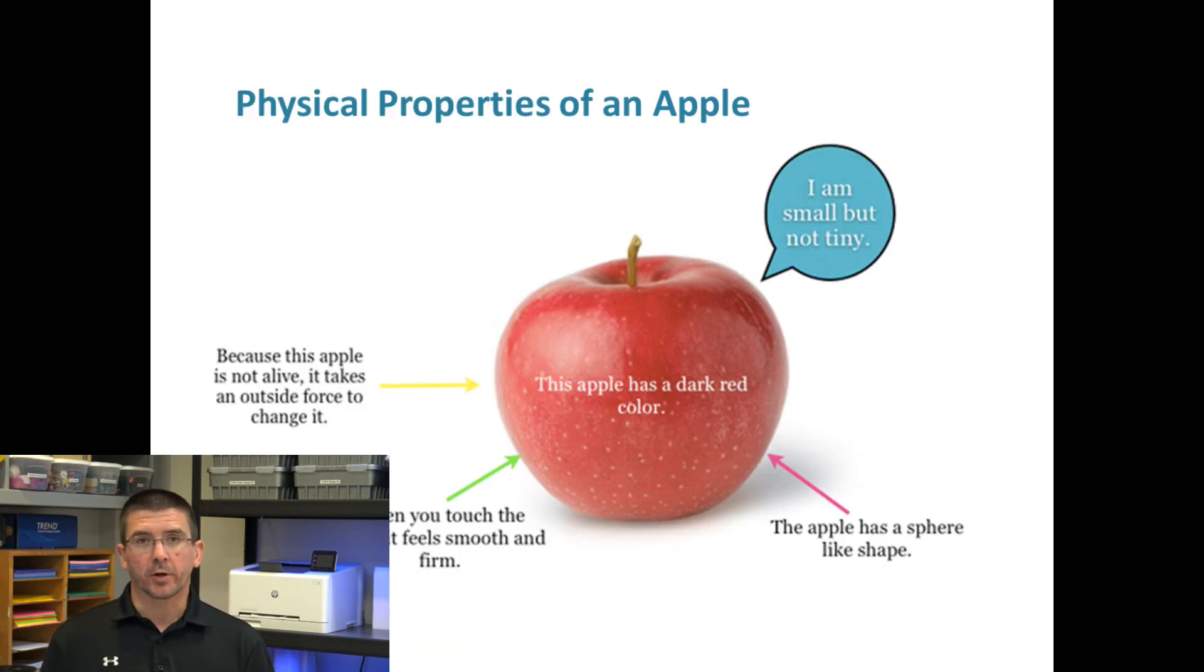For instance, if we look at an apple, we can examine its physical properties. We can describe its color, its shape, its size, its density, its mass, its texture. So many different things about it that we can observe just by looking at this apple or just by measuring it.